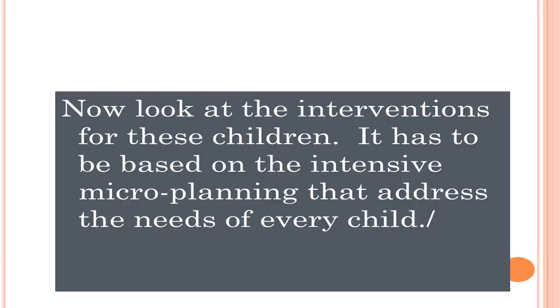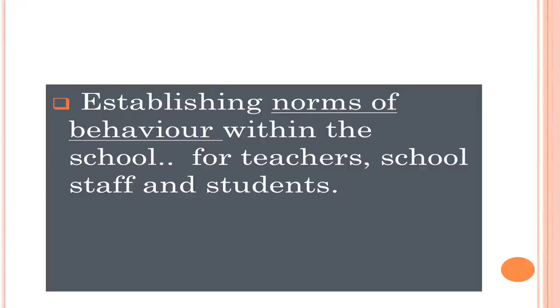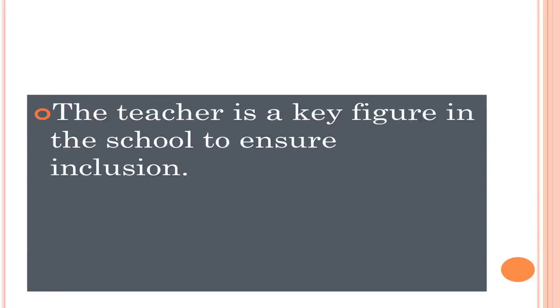Now, look at the interventions for these children. It has to be based on intensive micro planning that addresses the needs of every child. Some suggestions for the inclusion of these children in school: The first is establishing norms of behavior — establishing norms within the school for teachers, school staff, and students. The teacher is a key figure and plays an important role to ensure the successful implementation of inclusion in every classroom. Teachers have a special responsibility to educate first-generation learners of scheduled caste and scheduled tribes.